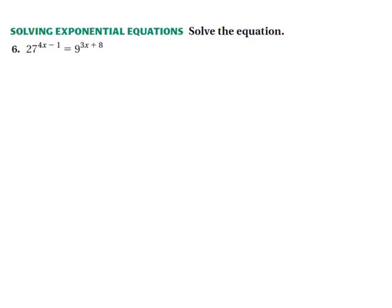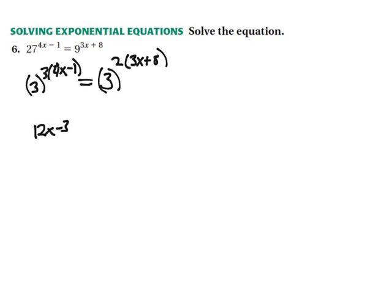Again, we have a variable in our exponents, so we need to get the same bases. End up with 3 cubed, and I wrote it a little different there, so 3 cubed to the 4x minus 1 equals, and then this is going to be 3 squared to the 3x plus 8. Distribute, you get 12x minus 3 equals 6x plus 16. Minus your 6 over, end up with 6x. Add your 3 over, end up with 19. Divide by 6, and you end up with 19 over 6.